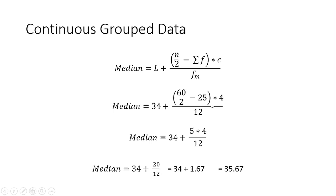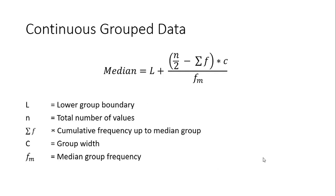Substituting: Median = 34 + ((60/2 − 25) / 12) × 4 = 34 + (5 × 4) / 12 = 34 + 20/12, which gives 35.67. This is the exact median value for the continuous grouped data set.